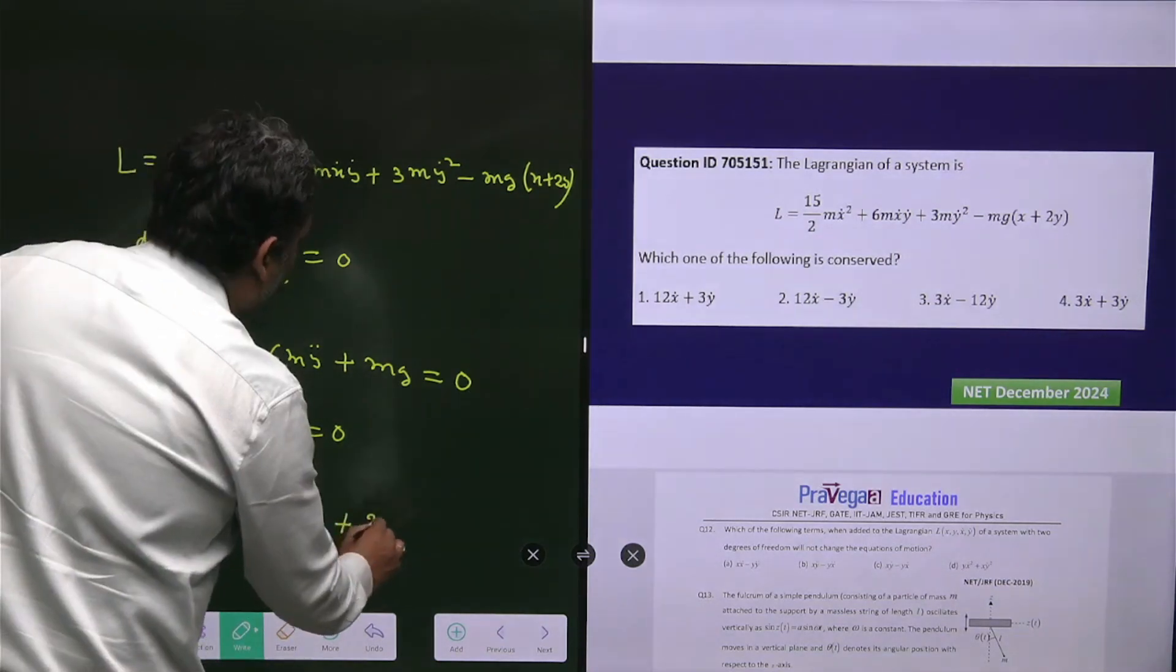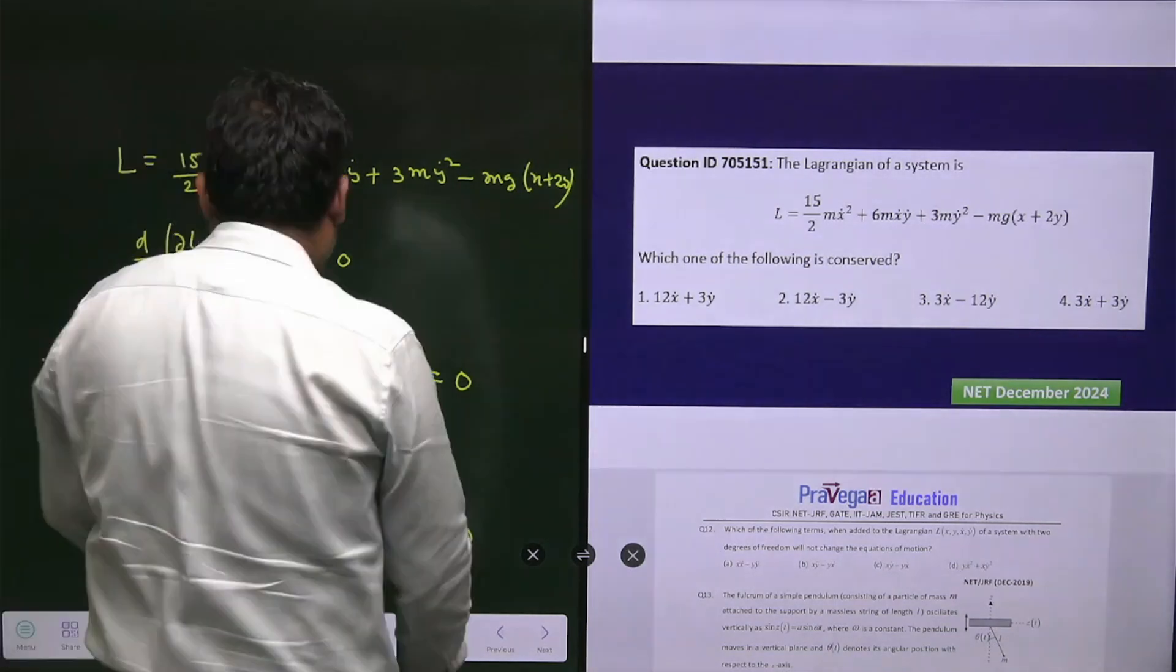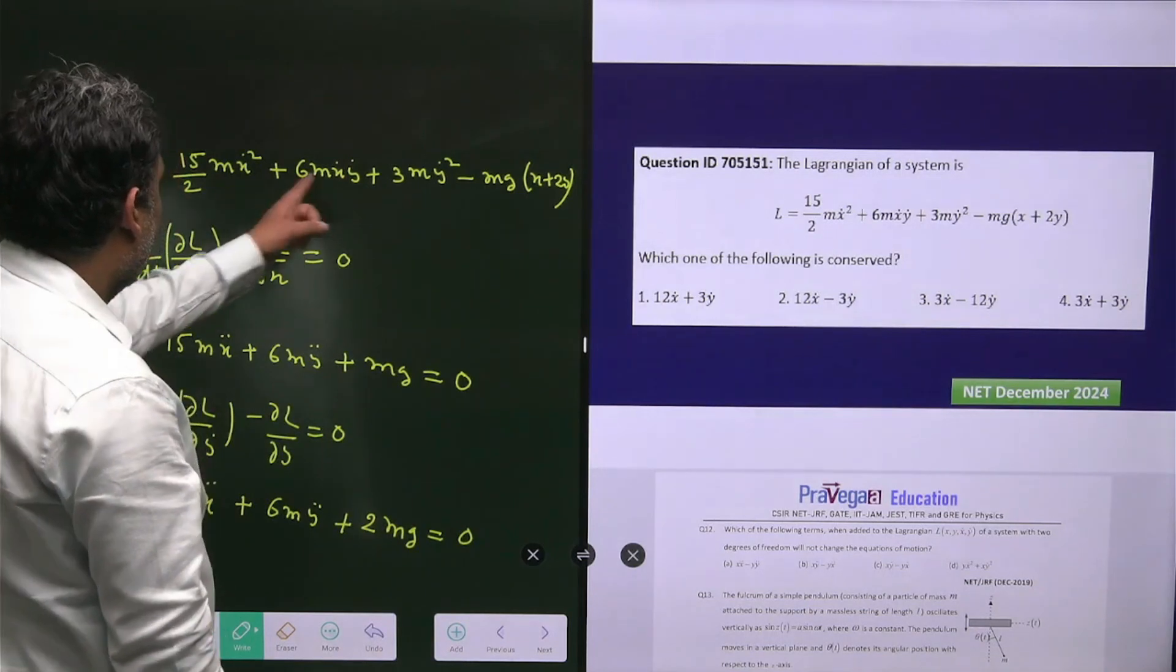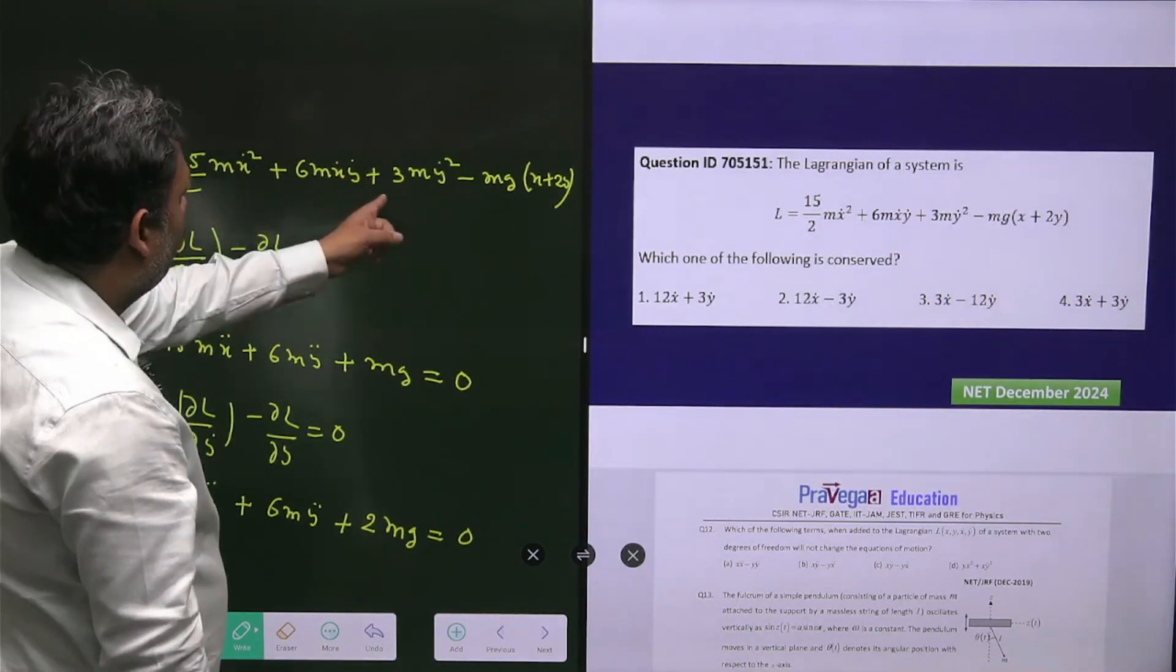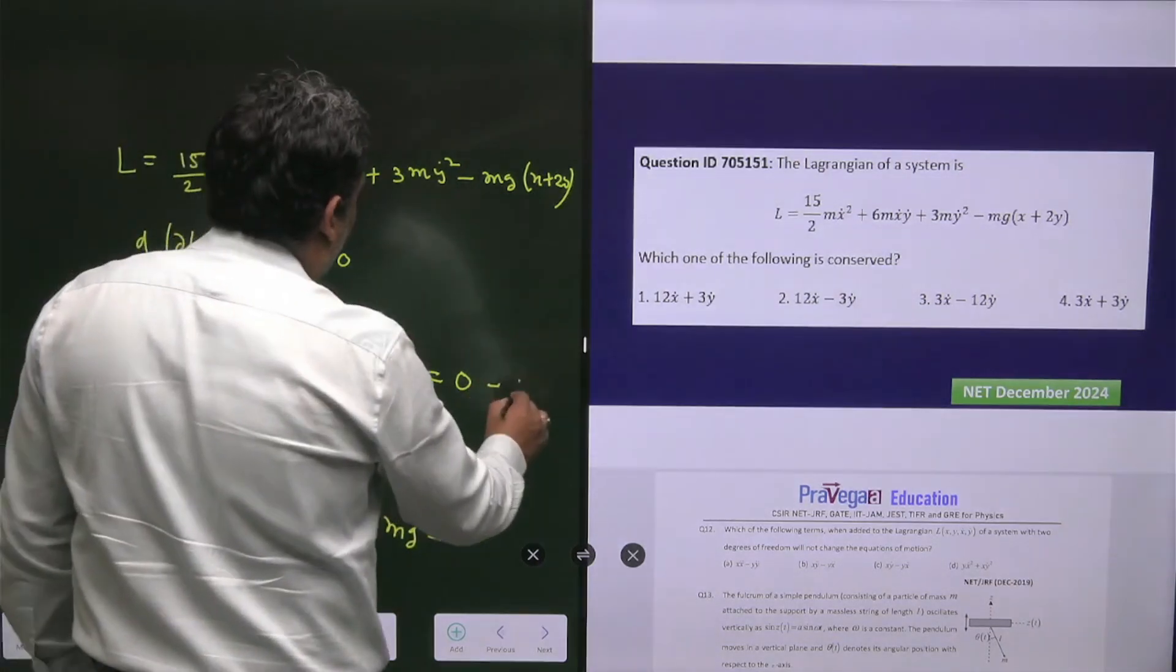And m is also there, so from 6mẏ you get ÿ, and you have +2mg = 0. We have basically two equations. Let me verify - this will be 6mẏ. We have equation A and B.